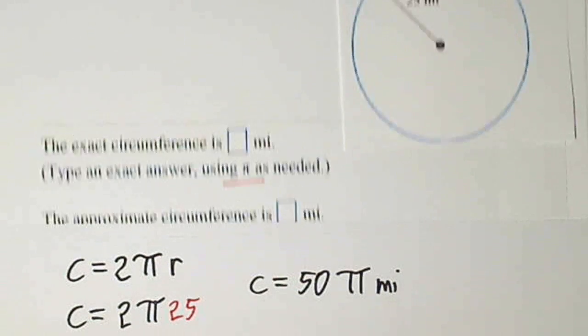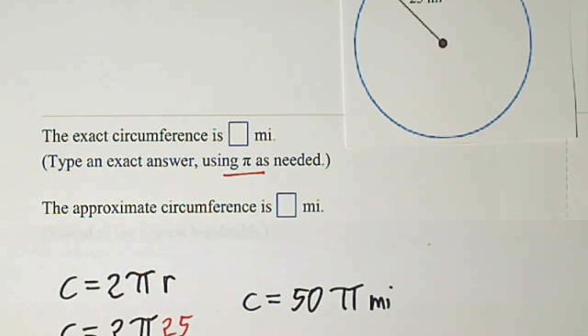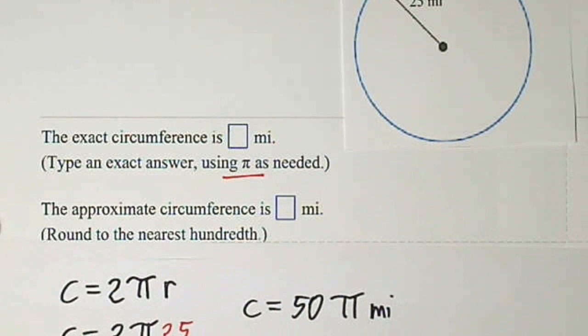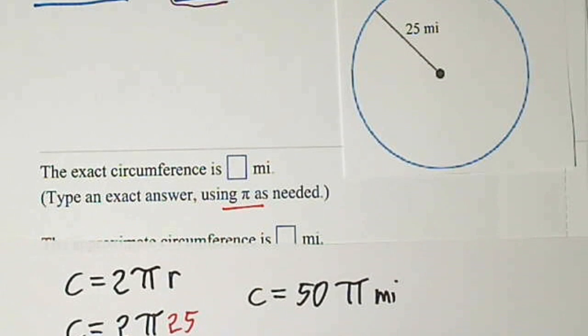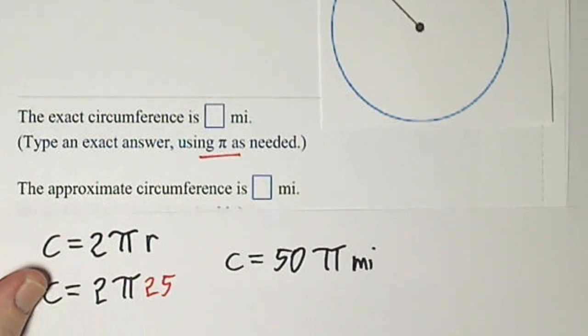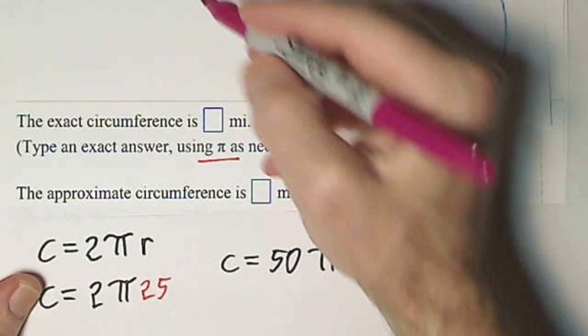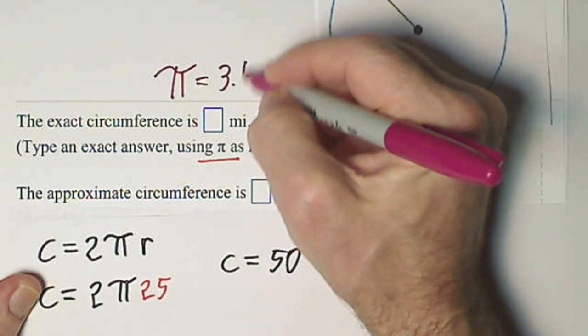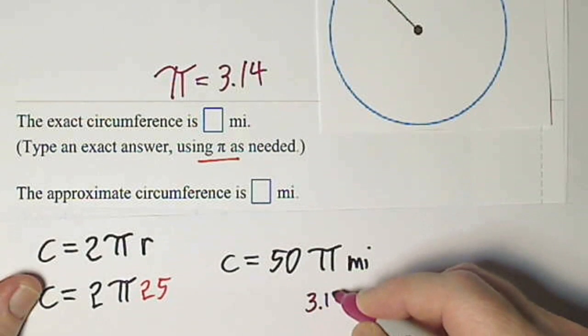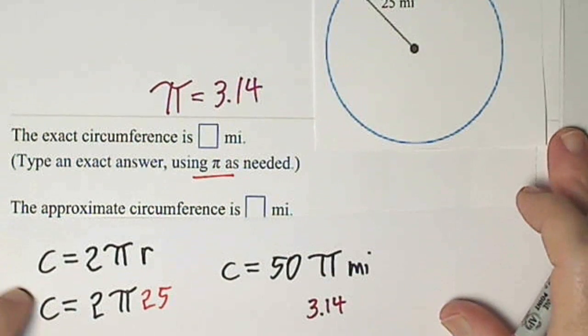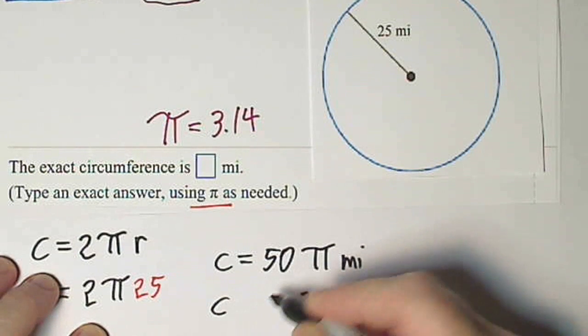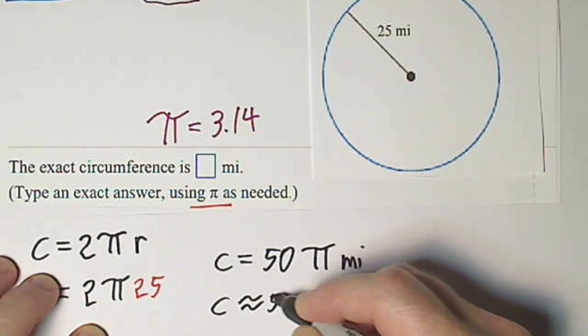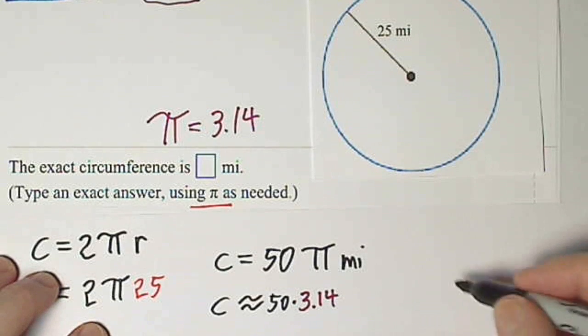But when they ask for the approximate circumference. And they're going to let us round to the nearest hundredth here, that'll be convenient. We basically, we just take pi and we plug in the 3.14. So we've already done some of the work. So we'll take our pi is equal to 3.14. We'll plug it in right here. And now we just have to multiply 50 times 3.14. So, now we'll be getting an approximation. And we'll just do our calculation over here.